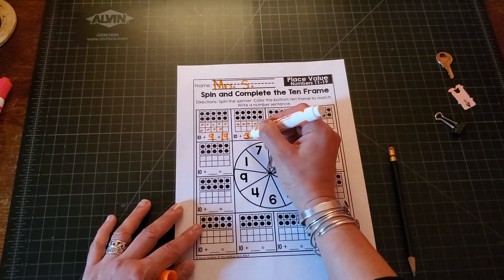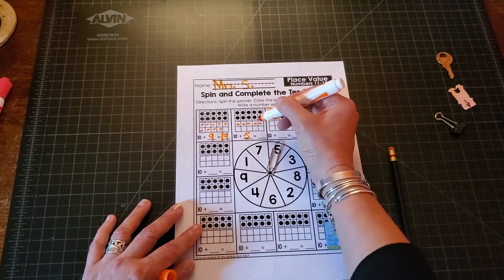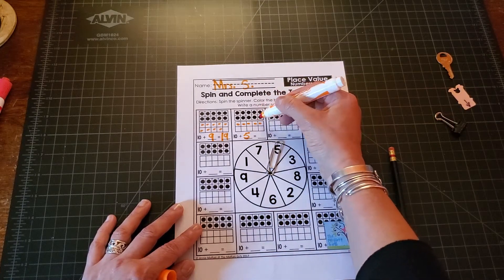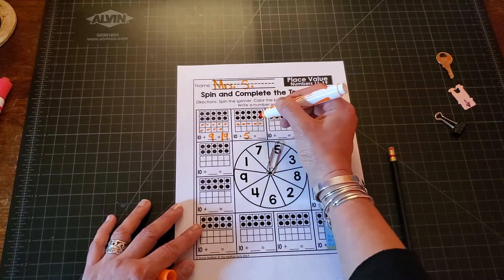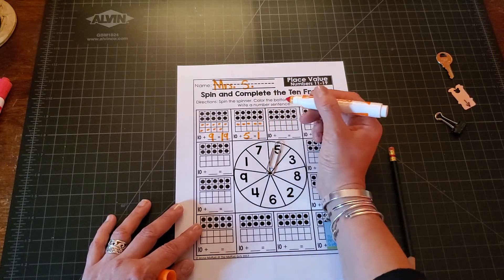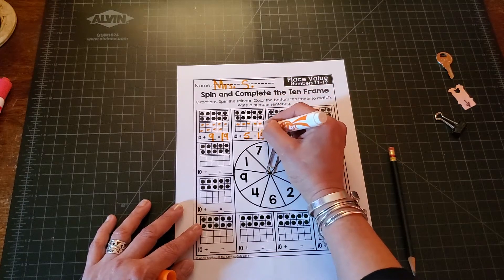Ten plus five more. Ten plus five more. And then count. Ten, eleven, twelve, thirteen, fourteen, fifteen. A one first. And then the five for the some more.